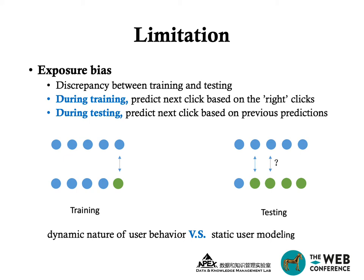Previous neural-based click models suffer from the so-called exposure bias, which refers to the discrepancy between the training and testing stages. During training, click models are trained to predict next clicks based on the ground-truth clicks, while during testing we must predict next clicks based on previous predictions. This limitation highlights the conflict between the dynamic nature of user behavior and the static user modeling used.